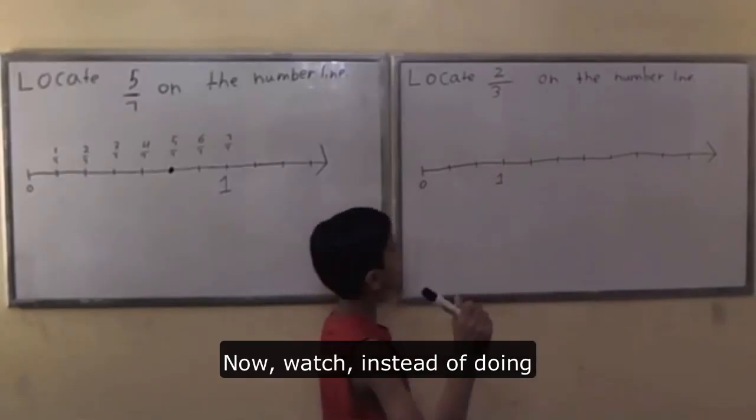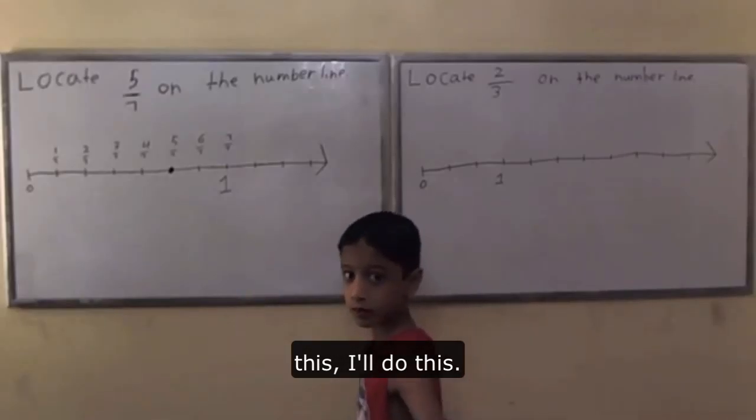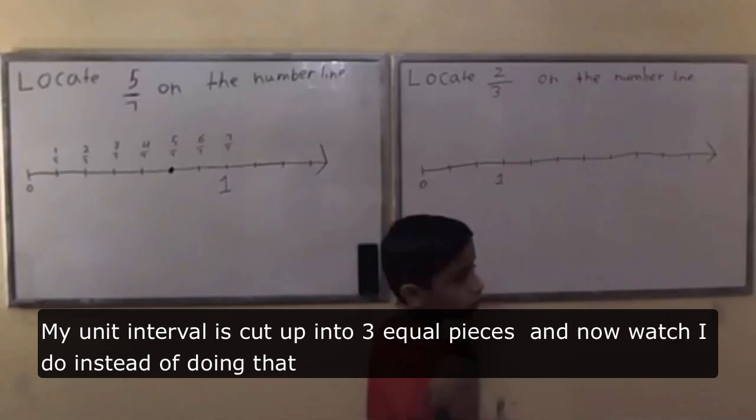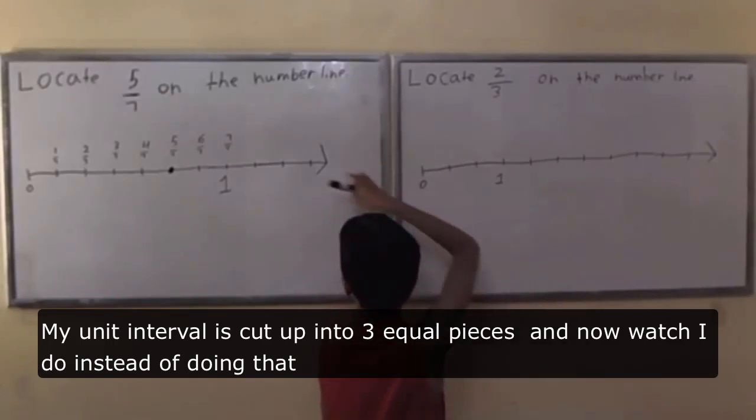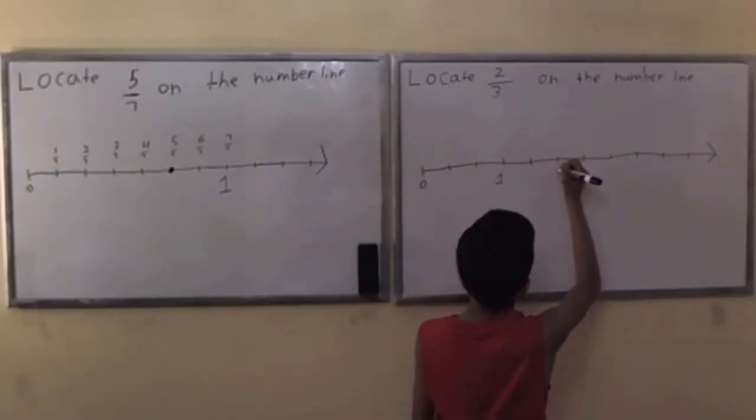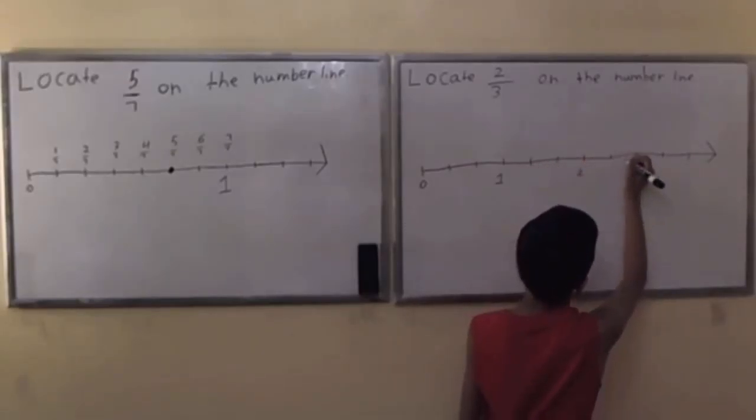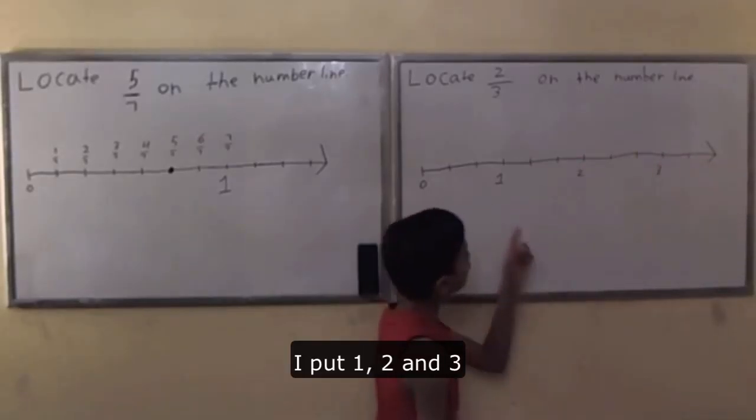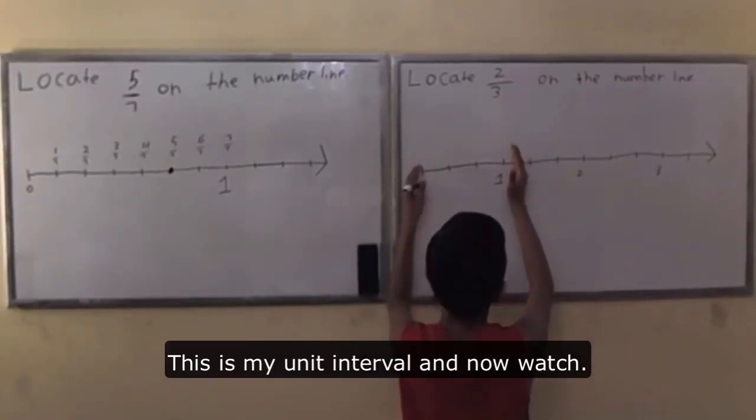Now watch. Instead of doing this, I'll do this. My unit interval is cut up into three equal pieces. Now I put one, two, and three. So this is my unit interval.